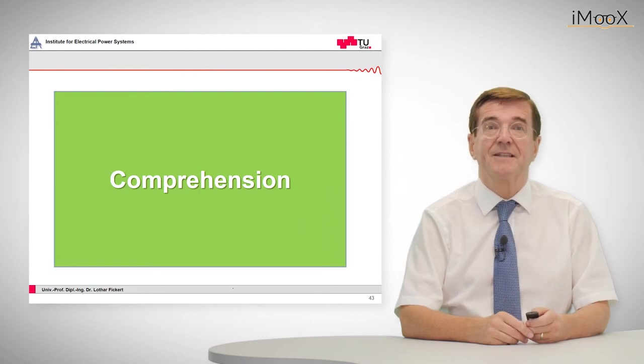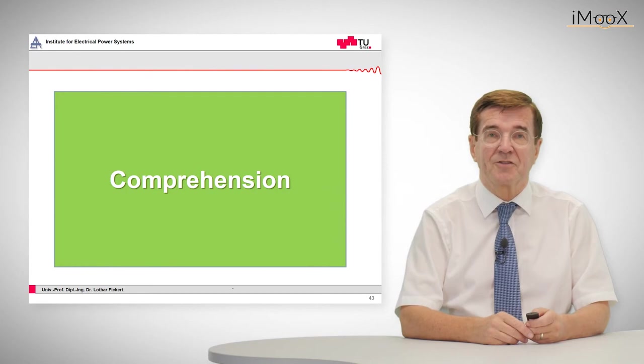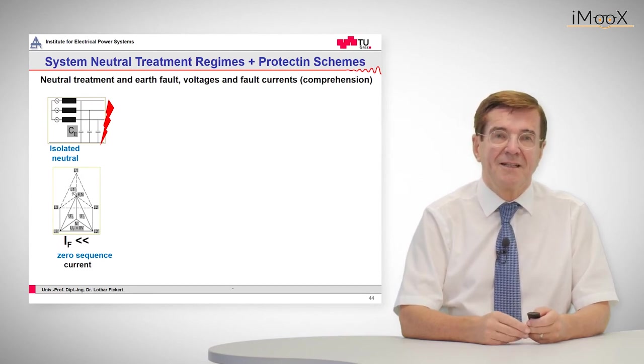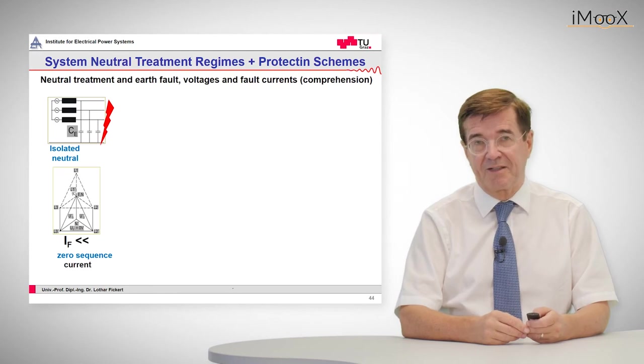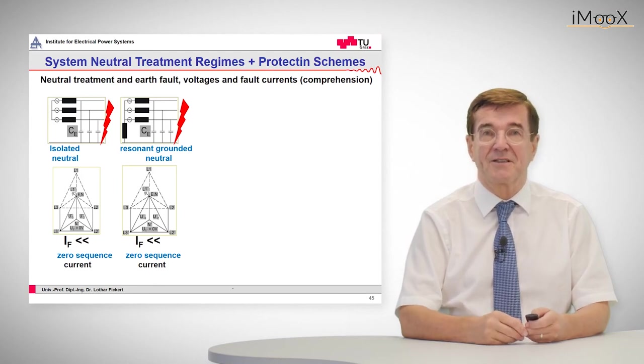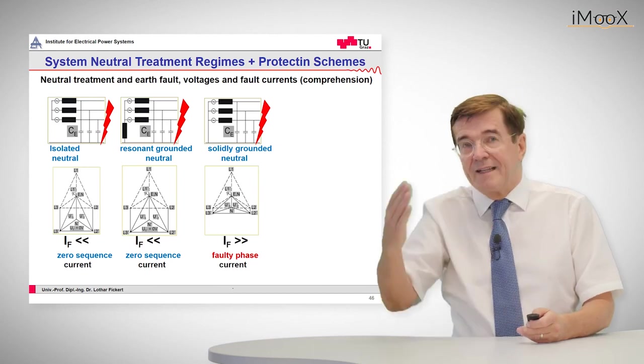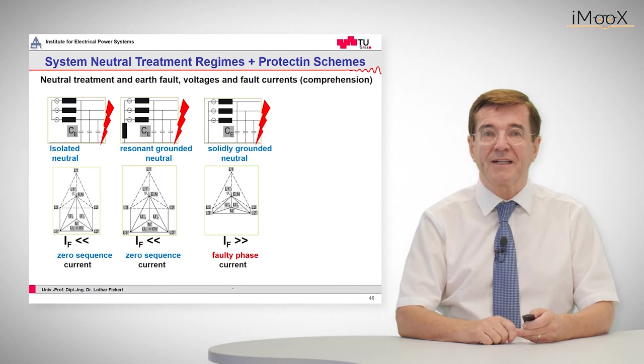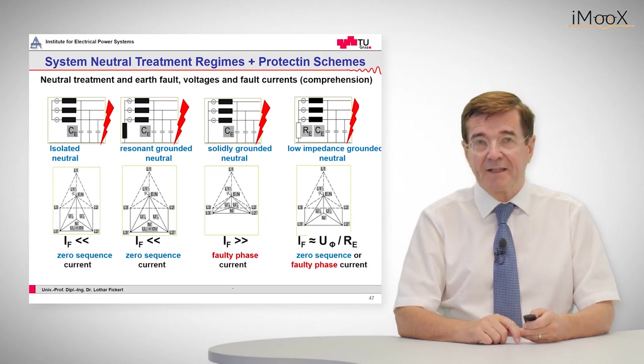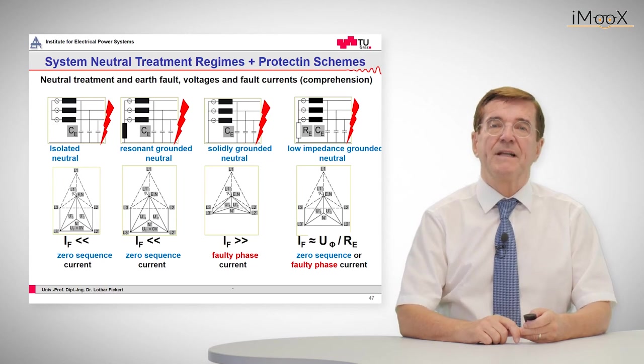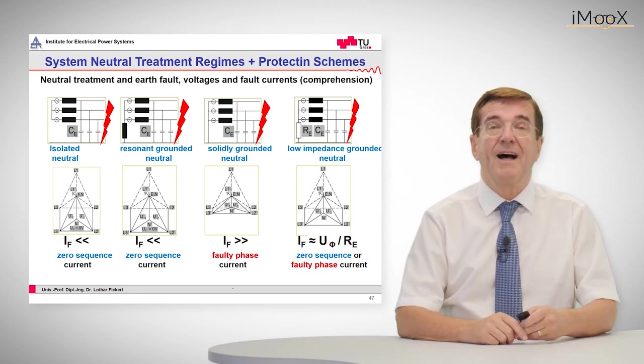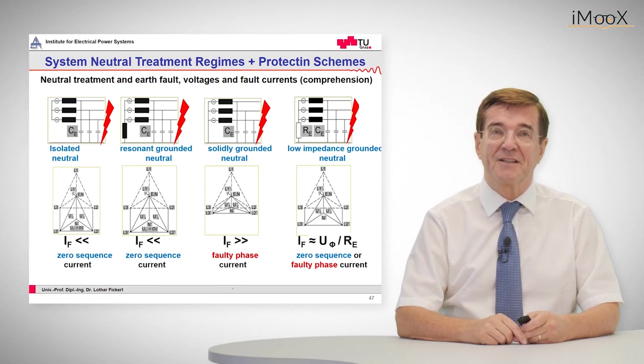A short comprehension of these four types of transformer neutral point treatment. First, we started with the insulated neutral, which is characterized by relatively low currents, and in this case the zero sequence current is decisive for protection behavior. Then we have the resonant grounded neutral, which is very similar. Again, the zero sequence current is used for protection purposes. Then the other class is the solidly grounded neutral. Here we have very high currents, and the faulty phase current is usually taken to locate the fault. And the in many countries used low impedance grounded neutral scheme results that we can use either zero sequence current or faulty phase currents. How this is done in detail will be shown in the next presentations.